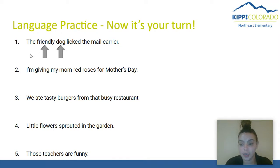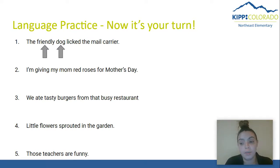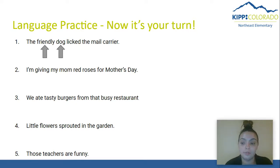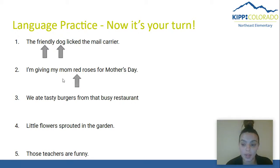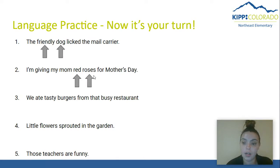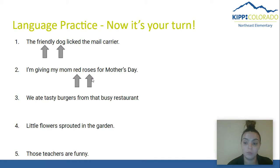Let's try this again. 'I'm giving my mom red roses for Mother's Day.' Where is our adjective — a word that's describing a noun? You got it, Kipsters! Red. Red is the describing word in this sentence. And what is red describing? Our noun — roses. Roses are a thing. So what kind of roses? Red roses.